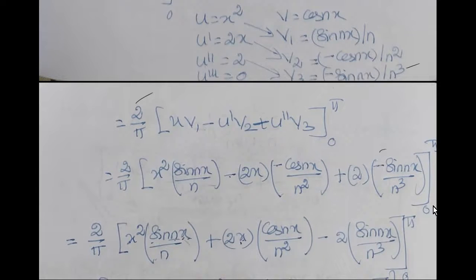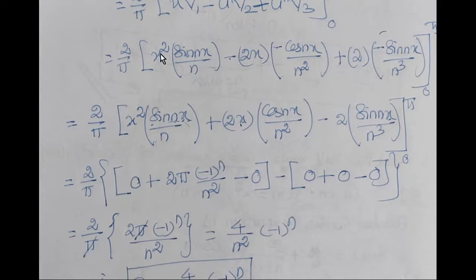For the range 0 to pi, we bring 2 by pi. If we use the upper limit, x squared is pi squared sin n pi. Sin n pi value is 0, so the segment is 0. 2 pi cos n pi value is minus 1 to the power n. 2 pi minus 1 to the power n by n squared. Sin n pi value is 0, so the term is 0.